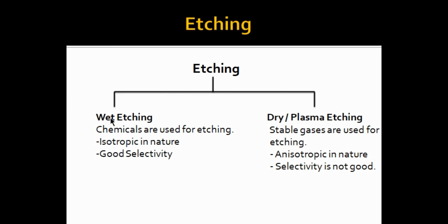There are two kinds of etching: wet etching and dry etching. Dry etching is also known as plasma etching. In wet etching we use chemicals to etch materials from the surface, whereas in plasma etching we use stable gases. Antenna violations occur during plasma etching and not during wet etching, but we still go for plasma etching only. Wet etching was used before plasma etching was invented.